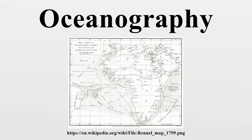Branches: The study of oceanography is divided into branches. Biological oceanography investigates the ecology of marine organisms in the context of the physical, chemical and geological characteristics of their ocean environment. It is closely aligned with marine biology, though the latter has more emphasis on the biology of individual marine organisms. Chemical oceanography, or marine chemistry, is the study of the chemistry of the ocean and its chemical interaction with the atmosphere. Geological oceanography, or marine geology, is the study of the geology of the ocean floor including plate tectonics and paleoceanography.